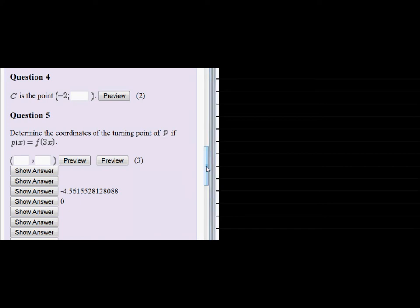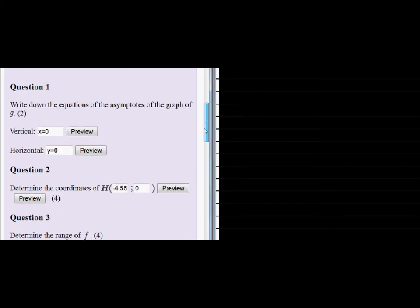Question 4. C is the point and they give us the x-coordinate and the y-coordinate is left out. So let's just go and see where is C on our graph.